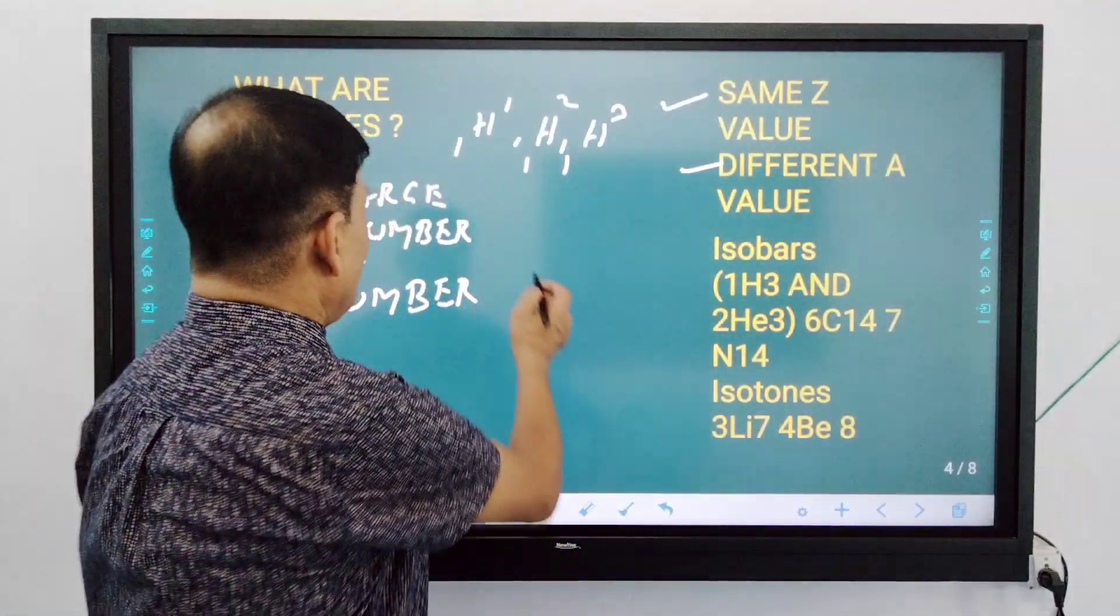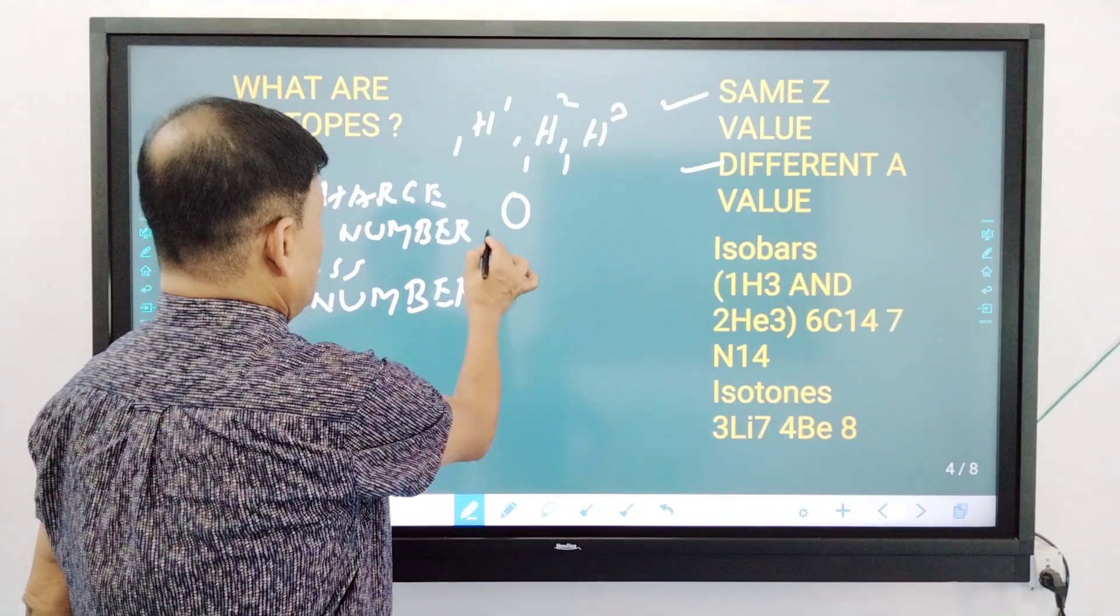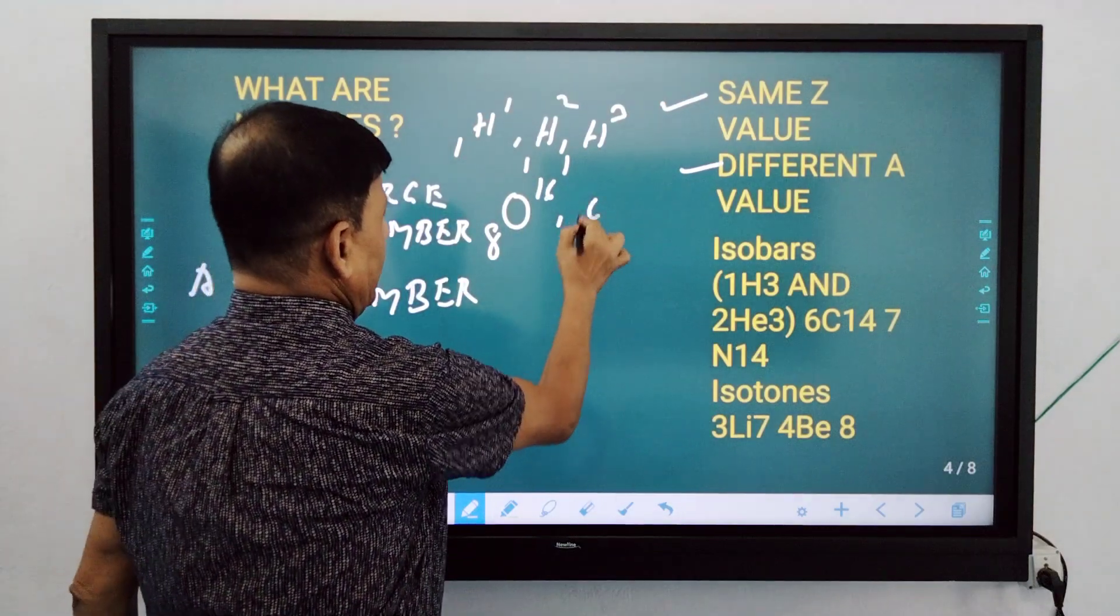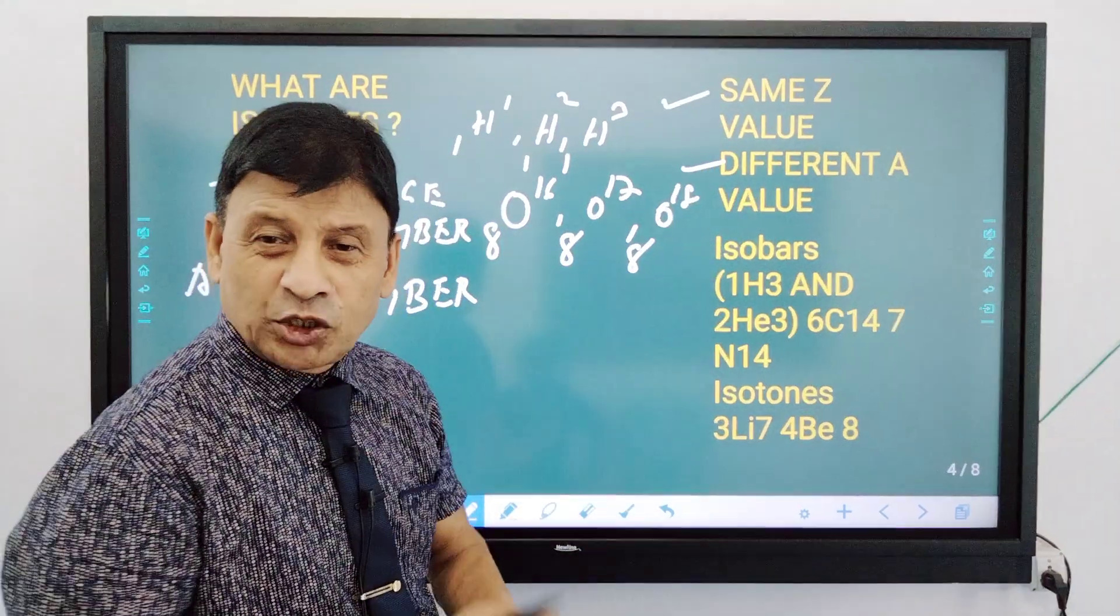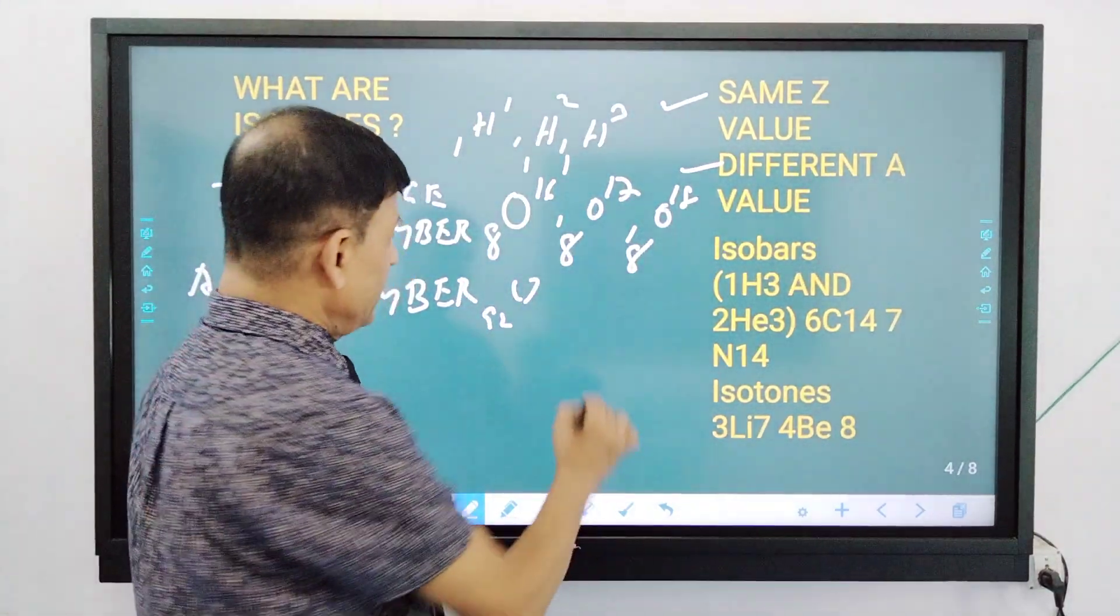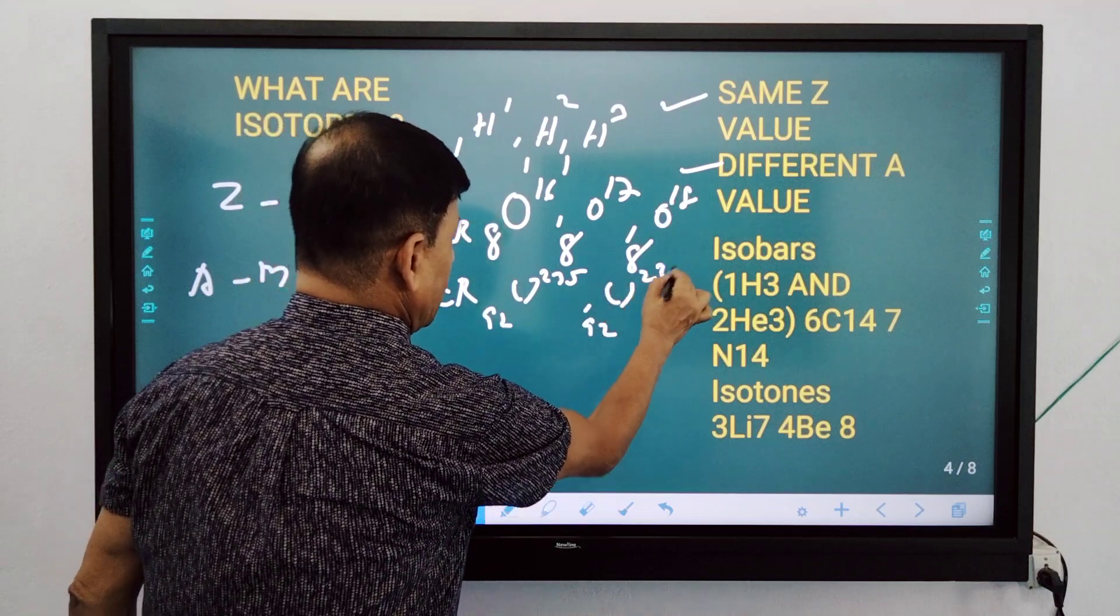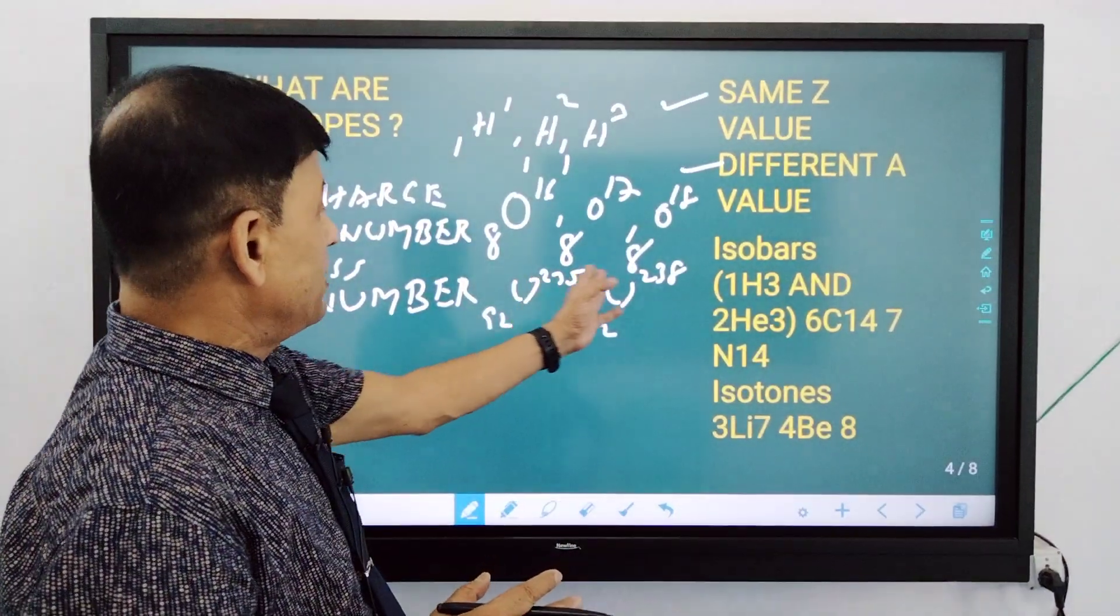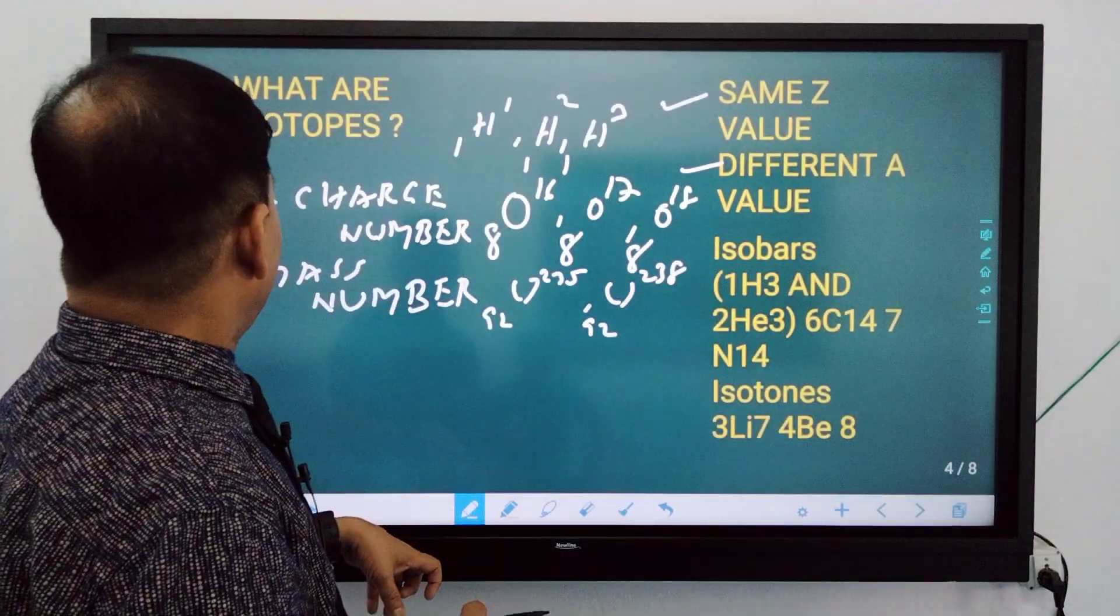Next is oxygen isotopes. If you know that oxygen, the charge number is 8. O16, O17, O18. These are the isotopes. Then you can talk about uranium: charge number 92, mass number 235. Uranium charge number 92 and mass number 238. These are isotopes. You can see that the charge number is same, mass is different.